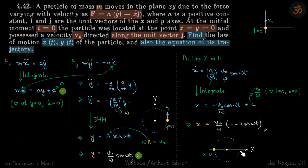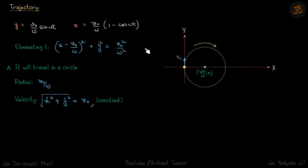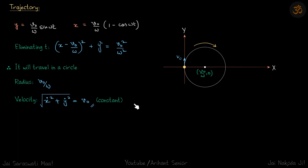We now have x and y in terms of time. For the trajectory, we eliminate t by squaring and adding both expressions so we get sin²(ωt) + cos²(ωt) = 1. This yields the equation of a circle with radius v₀/ω. The particle travels in a circle, and since the initial speed is v₀, the speed remains constant throughout the motion.